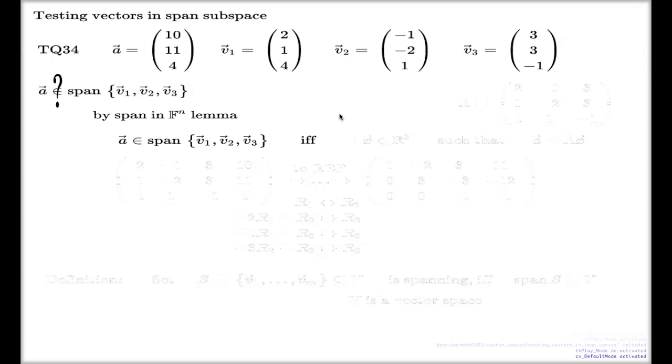Vector a being in span if and only if I can produce a vector x from R3 such that my a is the result of the multiplication of this x vector by the fixed matrix capital A, where the capital A matrix is composed out of these three vectors as columns.